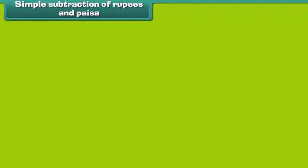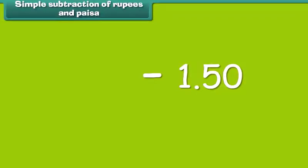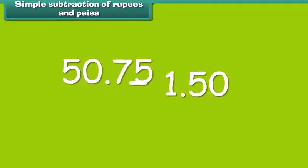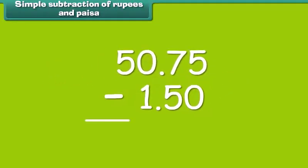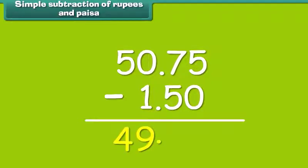Subtraction of rupees and paisa is simple. Subtract 1 rupee 50 paisa from 50 rupees 75 paisa. We first subtract numbers in the paisa column and then in the rupee column. So, the answer is 49 rupees and 25 paisa.